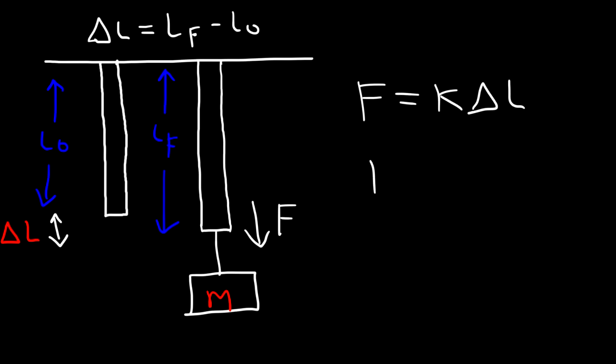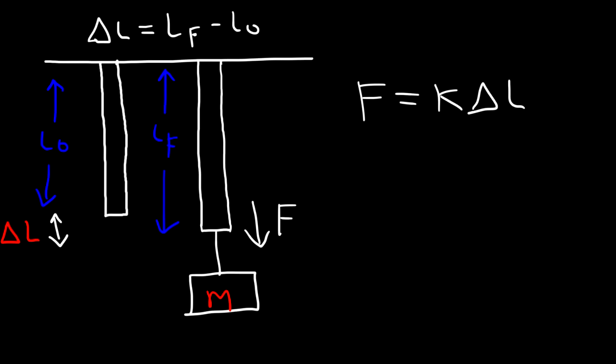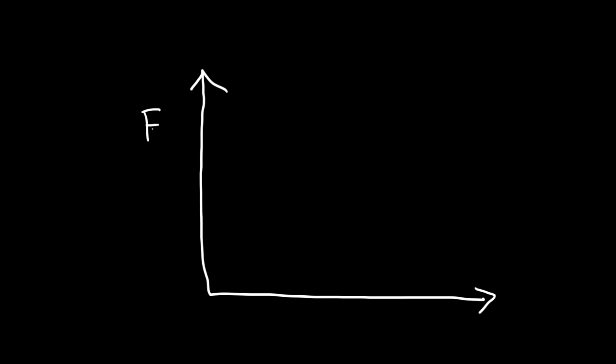Perhaps you've seen Hooke's law expressed this way: F is equal to negative kx. Now let's make a graph that describes the force and the change in length. We're going to put the force on the y-axis and the change in length on the x-axis.